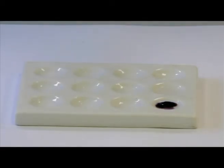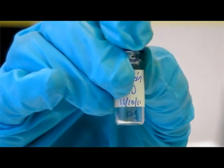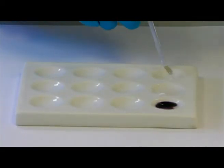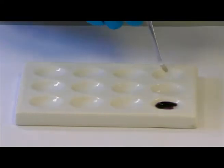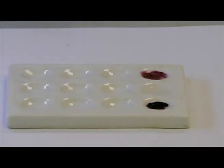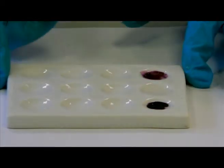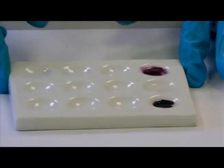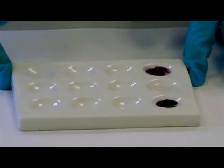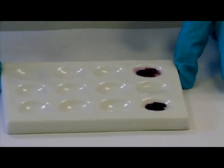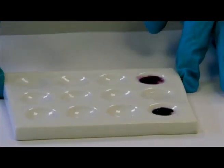Now I'm going to put the heroin standard into the well of the spot plate. So as you can see, both of our standards and unknown have gone purple, so this indicates to us that there is heroin in our unknown sample.